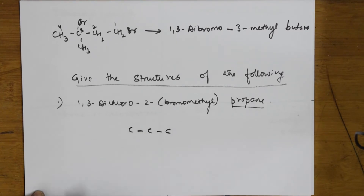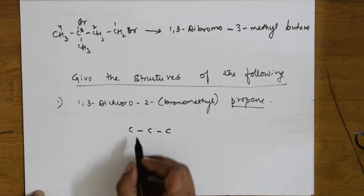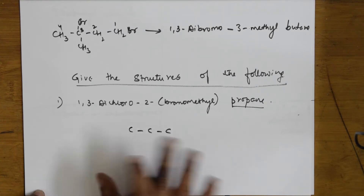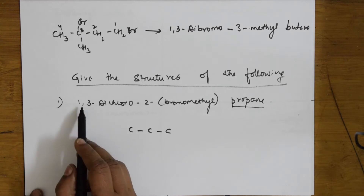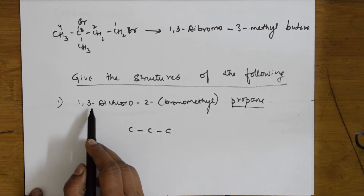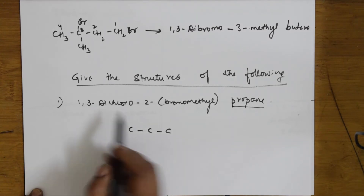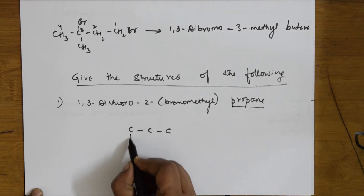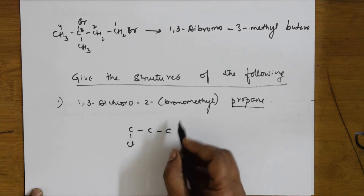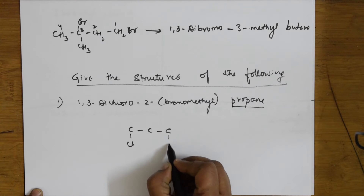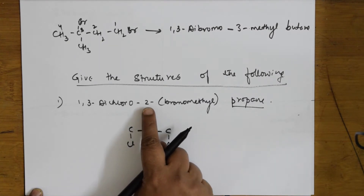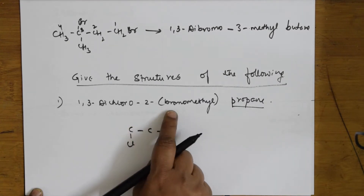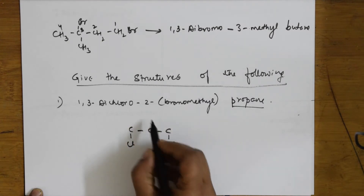Now fill in the substituents. They said at the first carbon and the third carbon there is chlorine — so this is the first carbon and the third carbon with chlorine. That part is over. Next, let me come back to the 2-bromomethyl part.